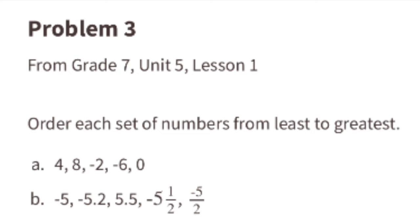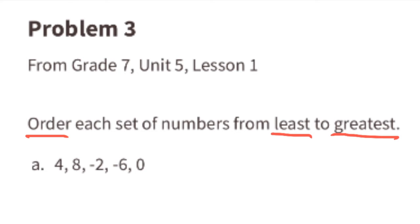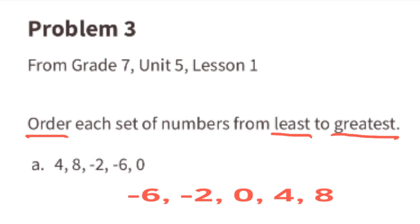Problem number 3 from 7th grade Unit 5 Lesson 1: order each set of numbers from least to greatest. For group A, we start with the negative number with the highest absolute value: negative 6. Next is negative 2, then 0 since we've run out of negatives. The smallest positive is 4, and finally the greatest value is 8.